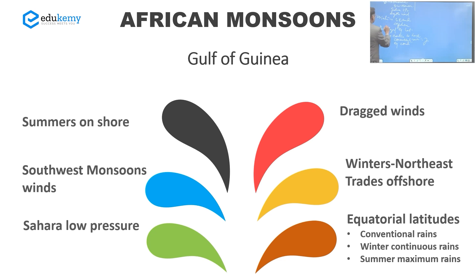So summers - I understand onshore southwest monsoon winds. What are these? These are essentially modified southeast trades or this is northeast trades. So summer I understand - onshore southwest monsoon winds. Sahara low pressure, it drags the winds north of the equator. Winters - there are northeast trades, they are offshore, but because the location is equatorial latitudes, this area continues to have convectional rains.